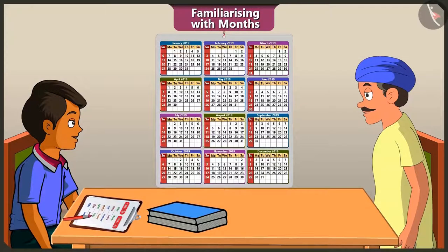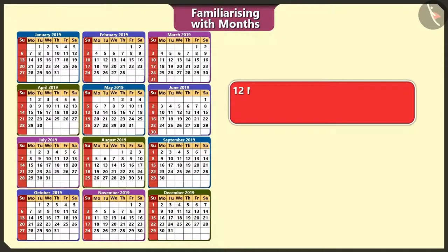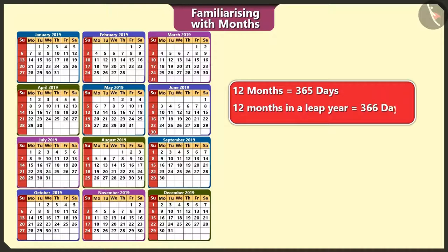Uncle, if we add all the days of the 12 months, then what is the total number of days? If we add all the days of 12 months, it makes a total of 365 days. And if we add all the days of the 12 months in a leap year, then the total number of days is 366.